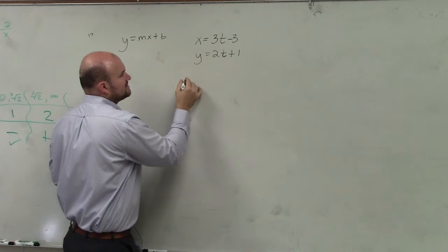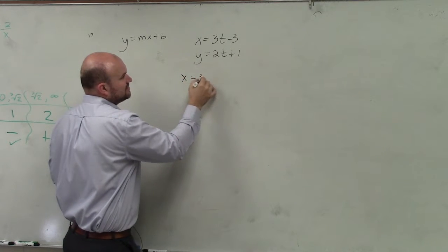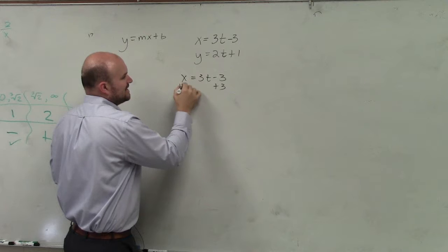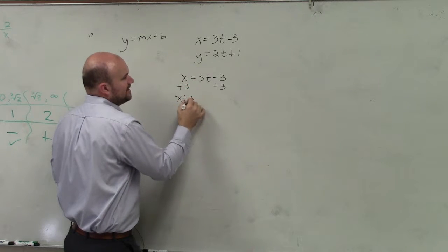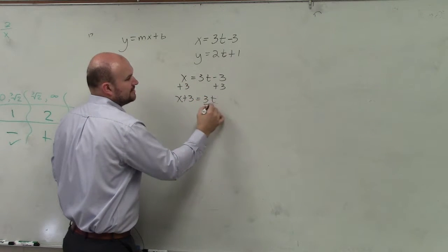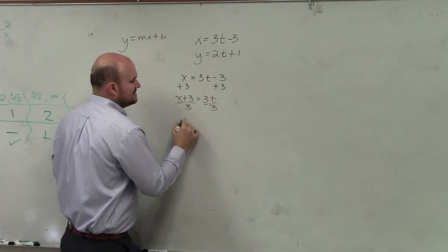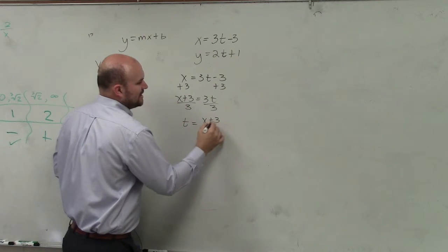So if I was going to go ahead and solve this, I'd have x equals 3t minus 3. Add 3 to both sides. I'd have x plus 3 equals 3t. Divide by 3. t equals x plus 3 over 3.